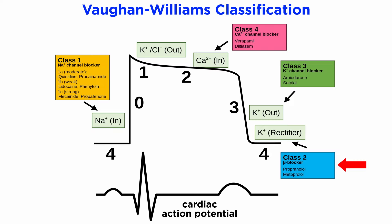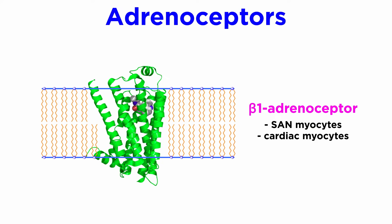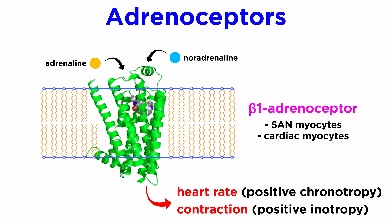In class two of the Vaughan Williams classification, we introduced beta-adrenergic receptor antagonists, commonly known as beta blockers. These drugs antagonize the beta-1 adrenoceptor and compete with circulating adrenaline and noradrenergic innervation from the sympathetic nervous system. Both adrenaline and noradrenaline are agonists at the beta-1 adrenoceptor, which is highly expressed on the plasma membrane across most cells of the heart. Activation of the beta-1 adrenoceptor increases both heart rate, or positive chronotropy, and force of contraction, or positive inotropy.